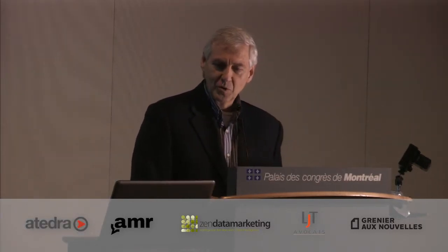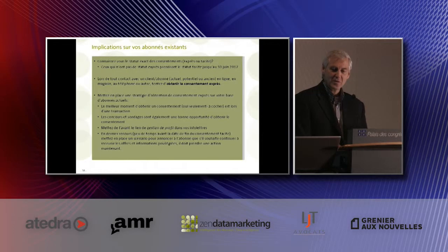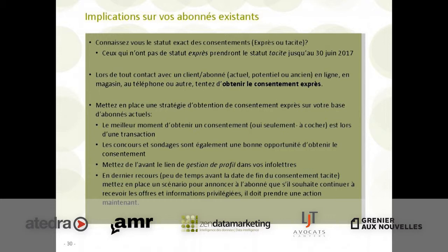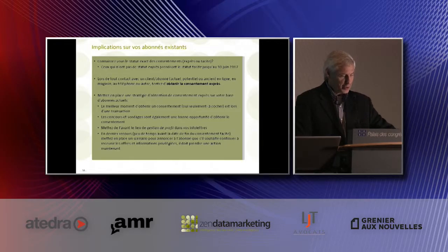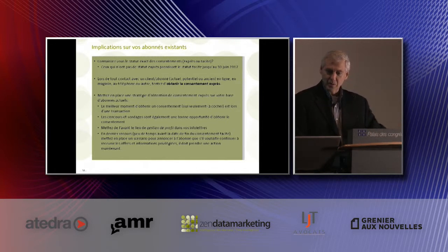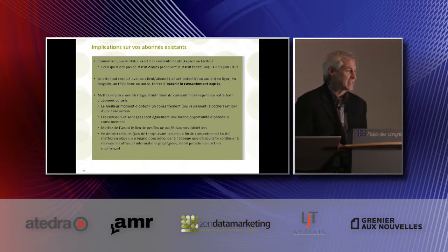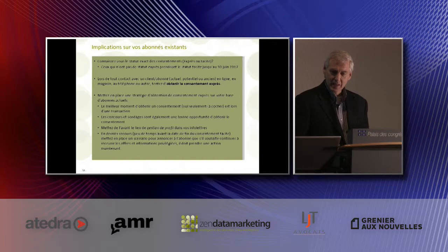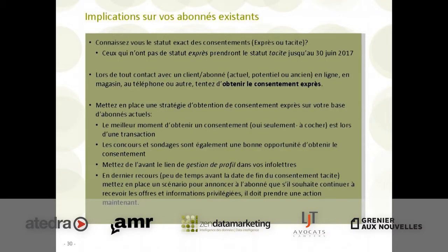L'implication sur vos abonnés existants : connaissez-vous le statut exact des consentements — express ou tacite ? Les clients, les organismes ont des bases de données. Ceux qui n'ont pas de statut express — ceux qui n'ont pas dit oui fermement — ont un statut tacite, et on a jusqu'au 30 juin 2017. La loi prévoit un délai pour les transformer de tacite à express. Lors de tout contact avec un client ou abonné — actuel, potentiel ou ancien, en ligne, en magasin ou au téléphone — tenter d'obtenir le consentement express.